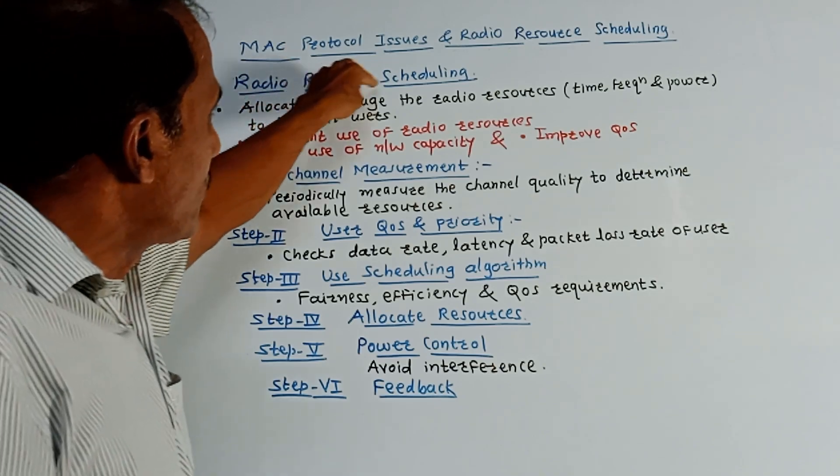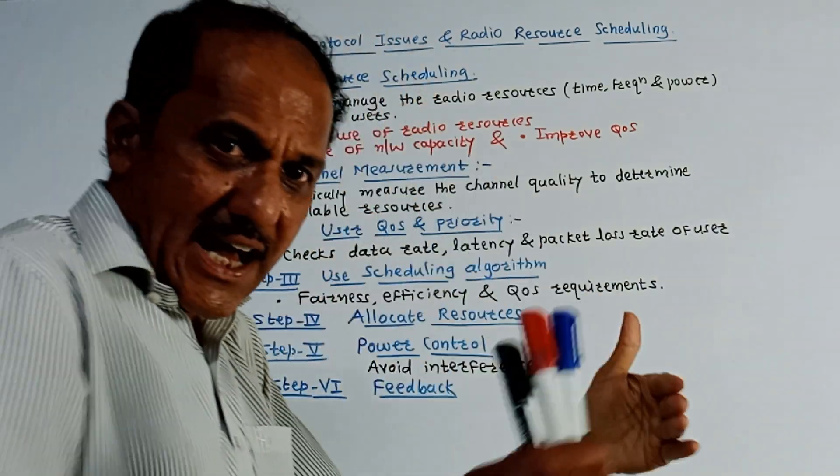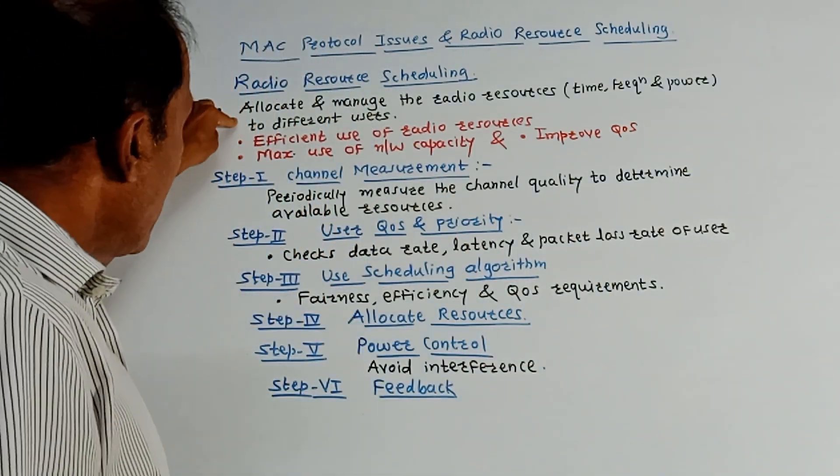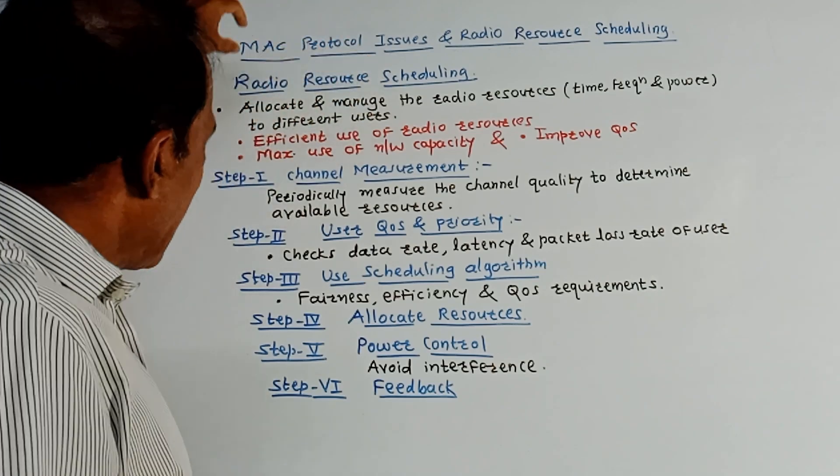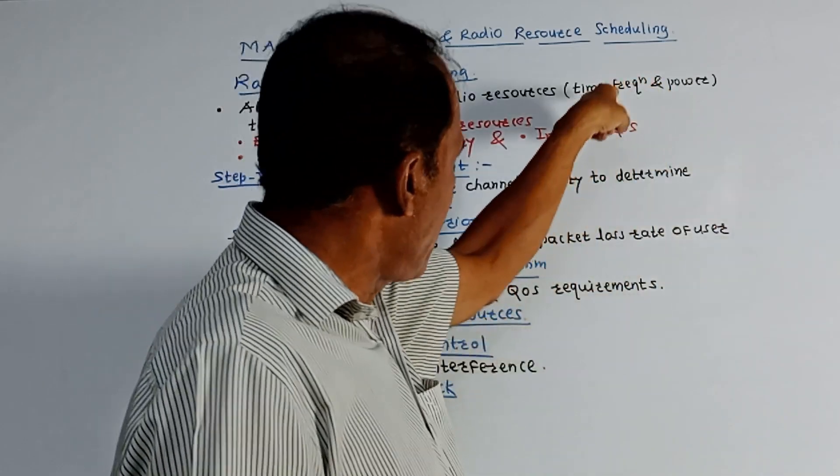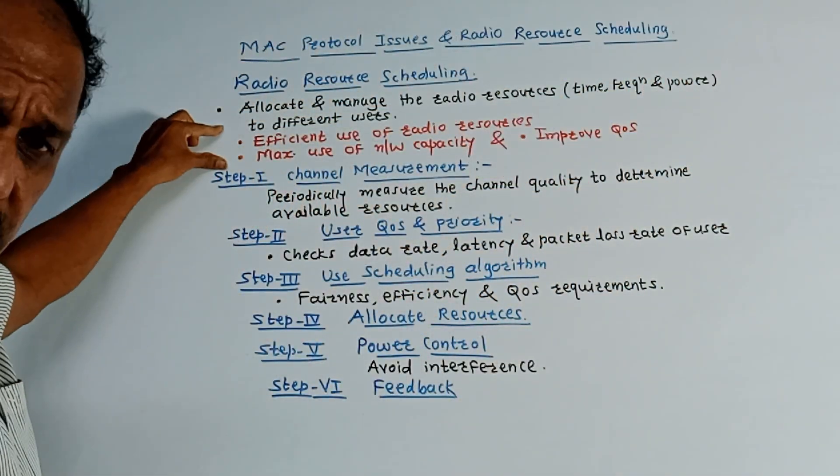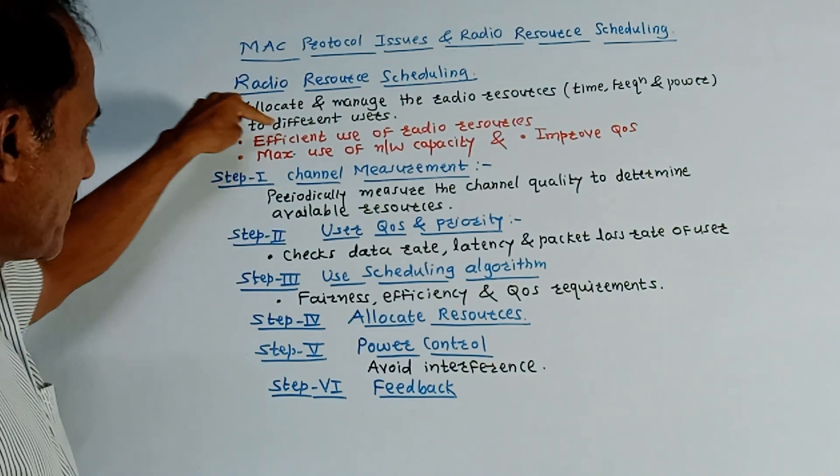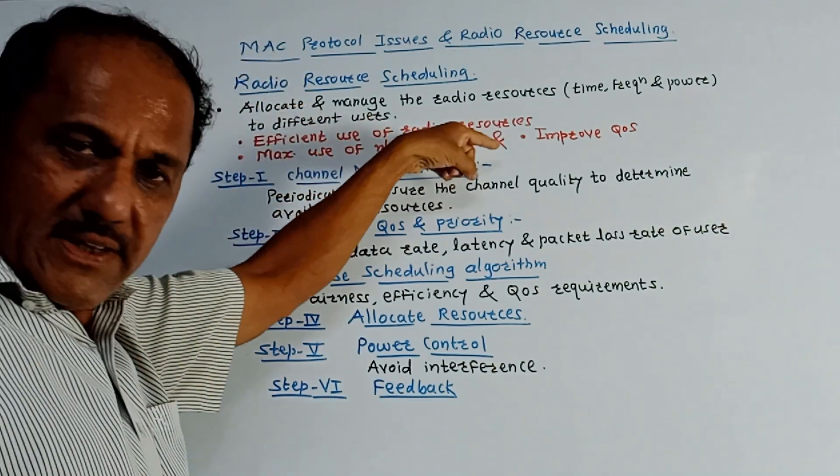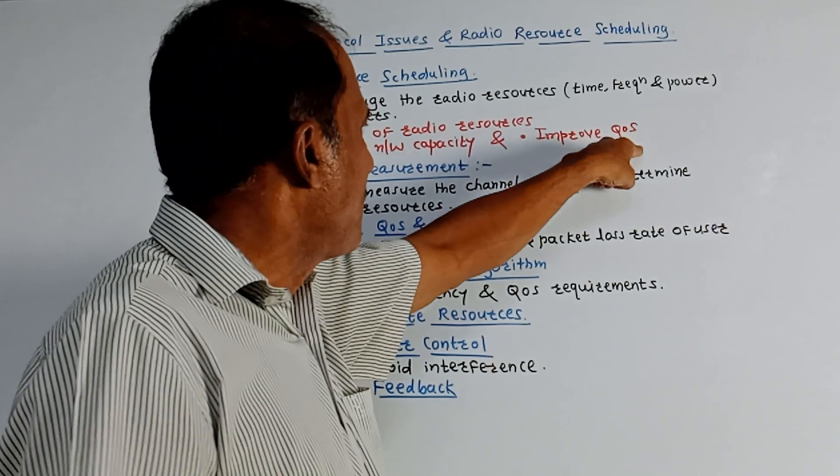So what is the meaning of radio resource scheduling? As the name indicates, different radio resources are scheduled by using certain criteria, certain techniques. So radio resource scheduling means allocate and manage the radio resources based on different criteria like time, frequency, and power to the different users. It is useful for efficient use of radio resources, then in order to make maximum use of network capacity, and it also used to improve the quality of service.